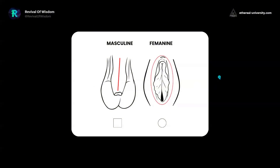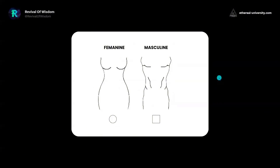This is why we have 10 numbers — zero and one, masculine and feminine. We even see this in the bodies. The feminine body is made out of curves, which is zero, and the masculine body is made out of lines.